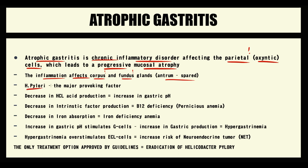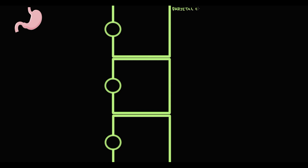Helicobacter pylori is considered the major provoking factor of autoimmune atrophic gastritis. To explain why, we have to know the pathogenesis. Here we have the stomach and its parietal cells. Parietal cells have hydrogen-potassium ATPase — a transporter that provides secretion of hydrogen ions into the lumen of the stomach, where hydrogen binds to chloride to form hydrochloric acid.